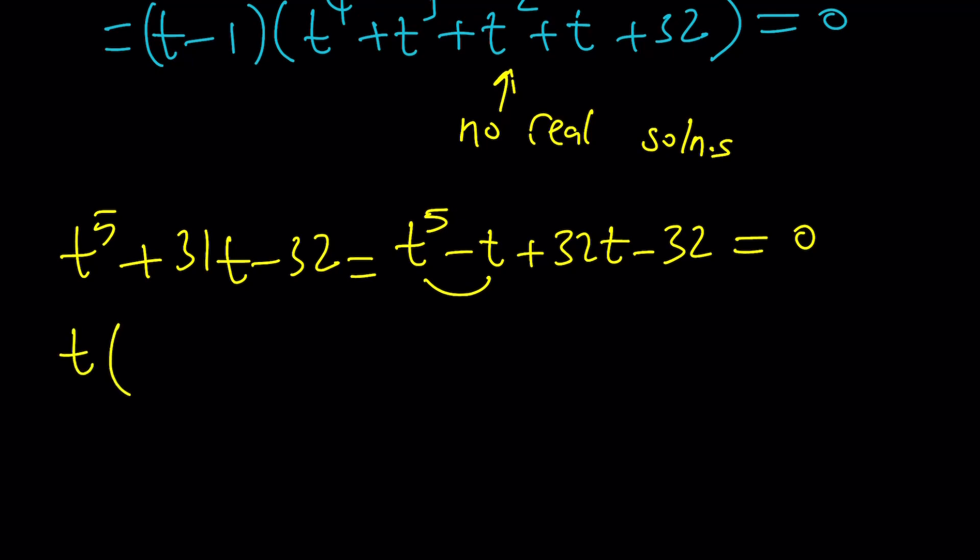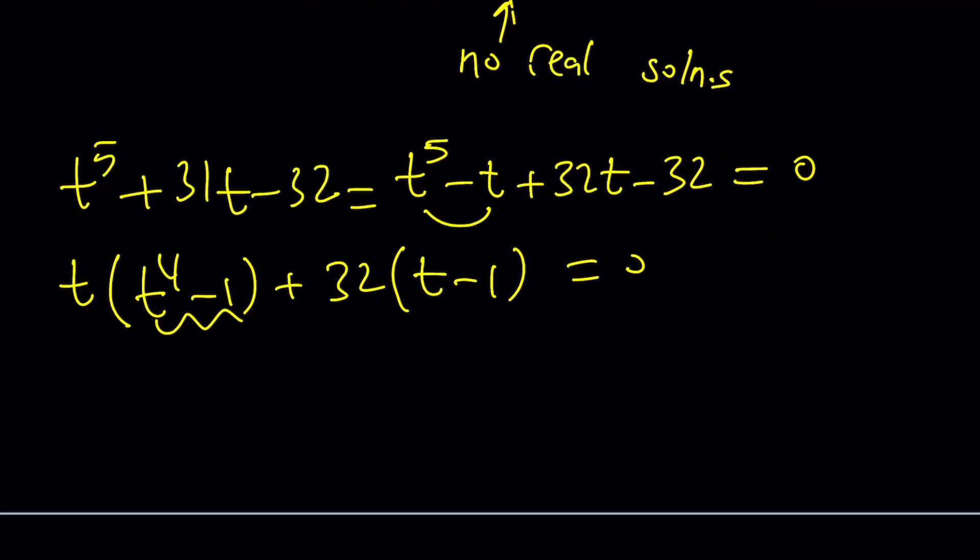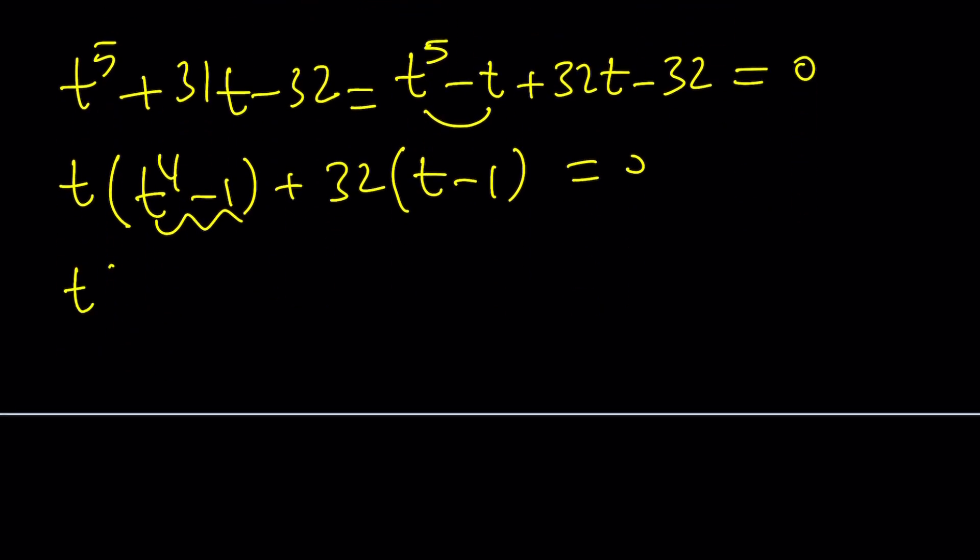But this time, I get something like this. T times T to the 4th minus 1 plus 32 times T minus 1. And then, this is factorable by difference of two squares. It's going to be T plus 1, T minus 1, which gives us T squared minus 1, times T squared plus 1. That gives us T to the 4th minus 1 plus 32 times T minus 1. And now, T minus 1 out, and you're going to get the same thing as before.